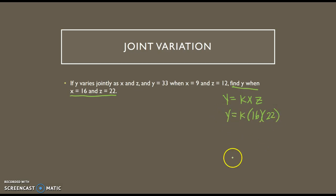Again, I can't solve for y until I know what k is. So I'm going to use the three values that it gives me to start with to find k. So I've got y equals kxz, I can plug in 33 for y, looking for k, 9 for x, and 12 for z. So I've got 33 equals 9 times 12 is 108k, divide by 108.